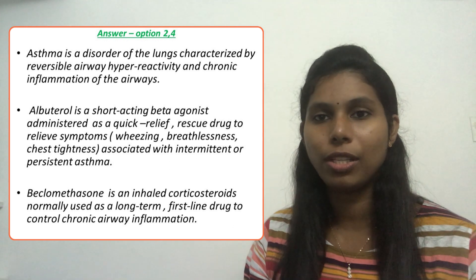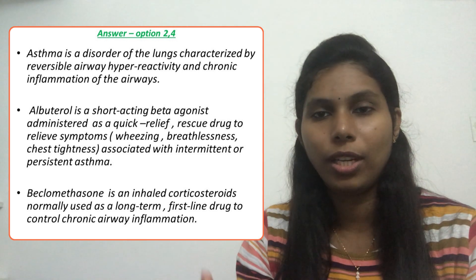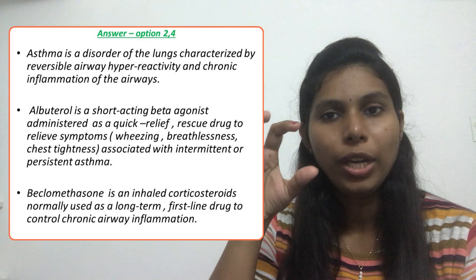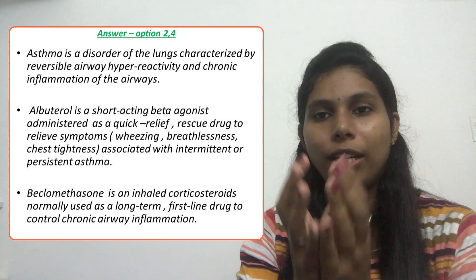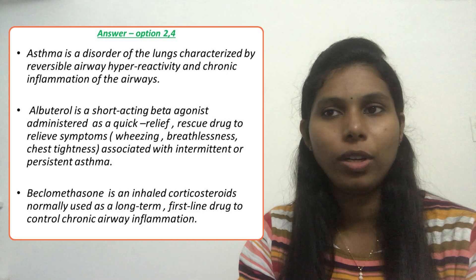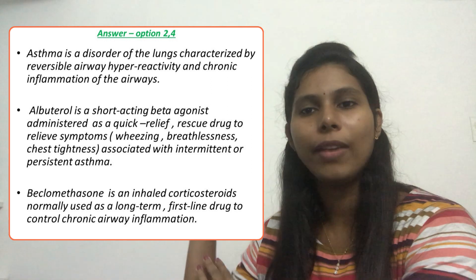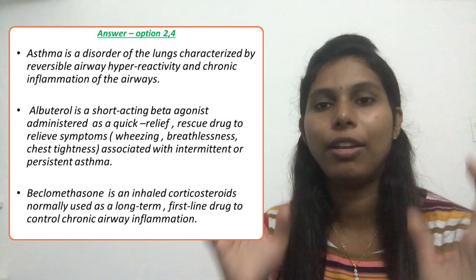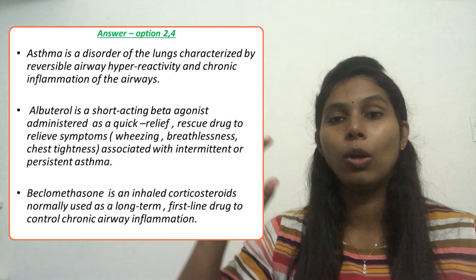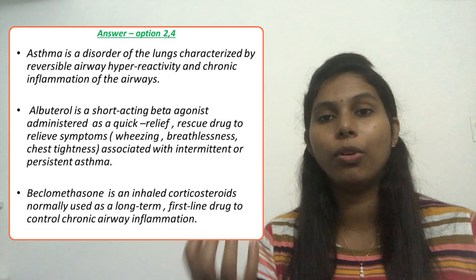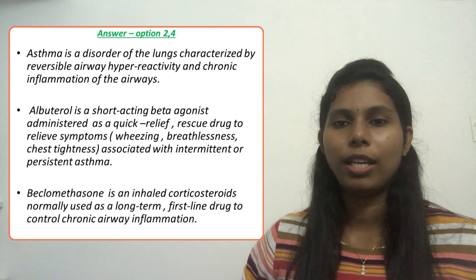If the client takes beclomethasone first without first using albuterol, the bronchial tube is still constricted and inflamed, so there is no way to move air properly — the resistance is high and beclomethasone will not give a good therapeutic effect. So first we give albuterol to open the airway, then give beclomethasone second, which will then have a much better therapeutic effect. Beclomethasone is a long-term medication used to control asthmatic inflammation, so option 4 is correct.